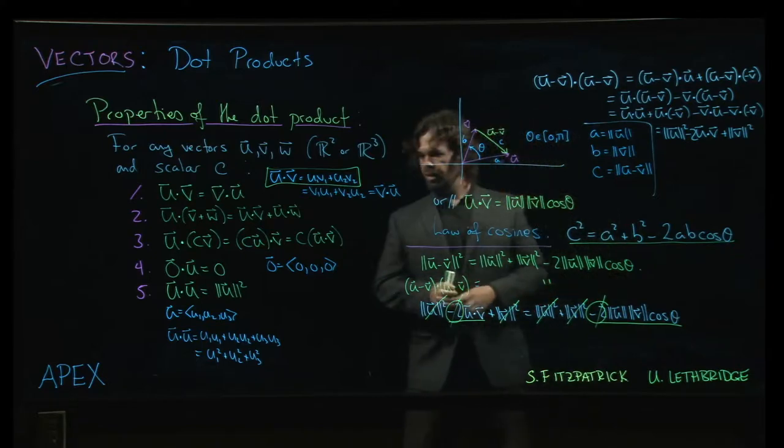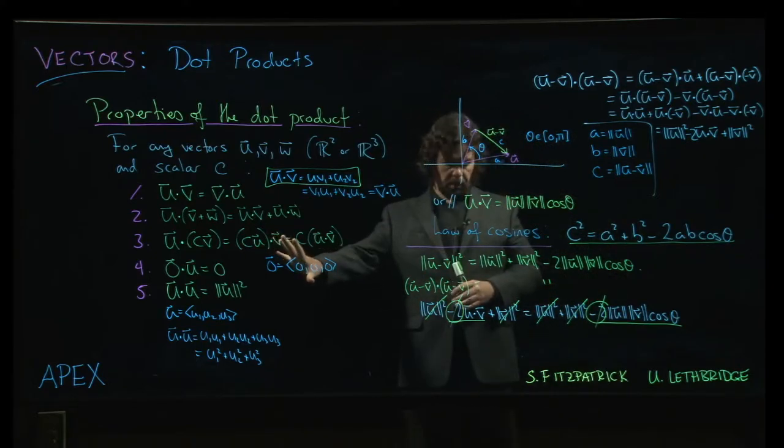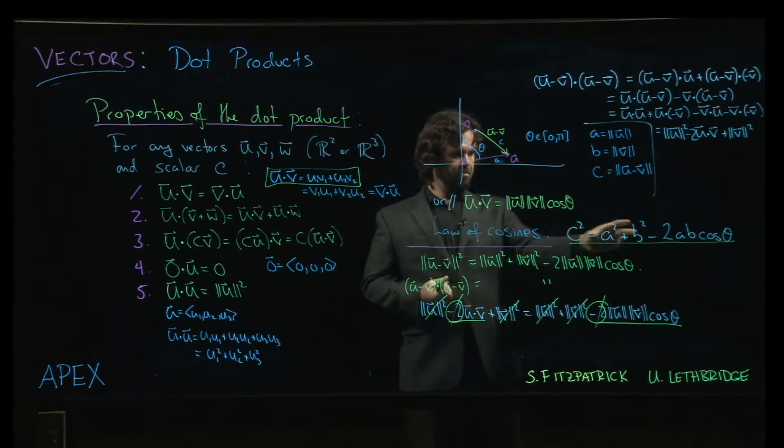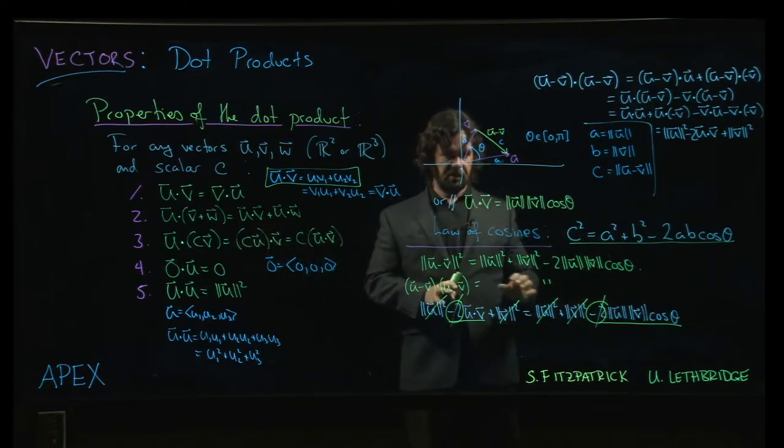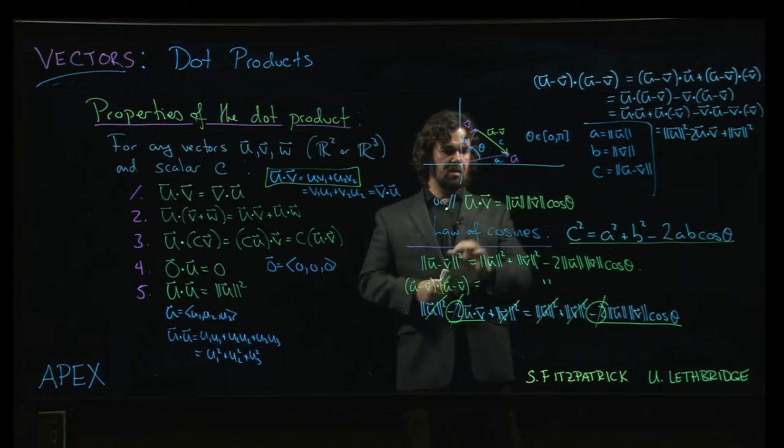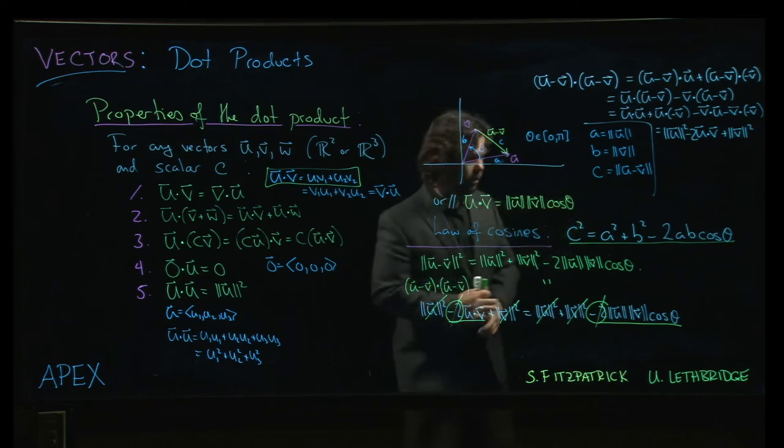Okay, so through these kind of purely algebraic properties and one trigonometry fact that we may have forgotten from high school, we're able to pass from the algebra over here to a very geometric fact, telling us this relationship between the dot product on the one hand and magnitudes and angles on the other.